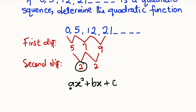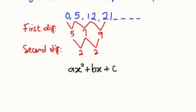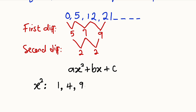We are going to substitute a = 1 into the first term and form another sequence. We have 1·x² which is just x². Substituting x = 1, 2, 3, 4: when x = 1, we get 1² = 1; when x = 2, we get 2² = 4; when x = 3, we get 3² = 9; when x = 4, we get 4² = 16.